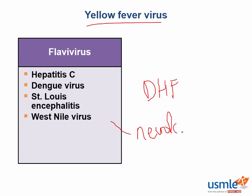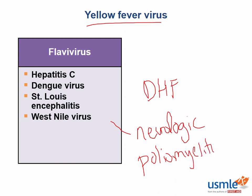Meningoencephalitis is inflammation of the meninges and the parenchyma of the brain. West Nile virus can even cause poliomyelitis, which is inflammation of the spinal cord that can lead to acute paralysis similar to what is seen in poliovirus infection.